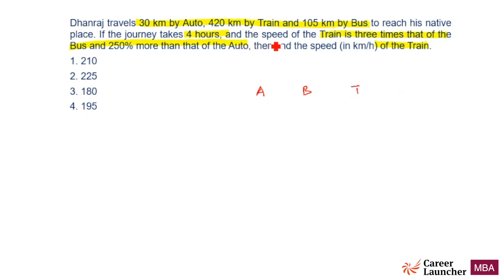We are given that the speed of the train is three times that of the bus. So if the speed of bus is 1, speed of train should be 3. And speed of train is 250 percent more than auto.